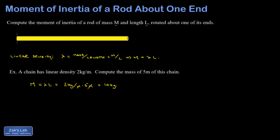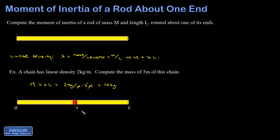Linear density is going to be handy when we start to analyze the moment of inertia of this rod. Our strategy for finding the moment of inertia is going to be to chop the rod into infinitesimal little elements, find the moment of inertia contribution of each of those elements, and then add them up. This little length here is dx, and the mass of that infinitesimal chunk — dm — is lambda dx.